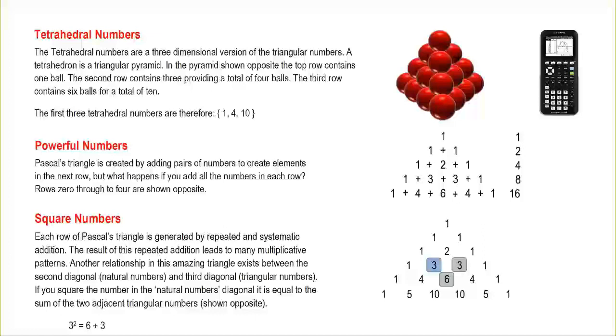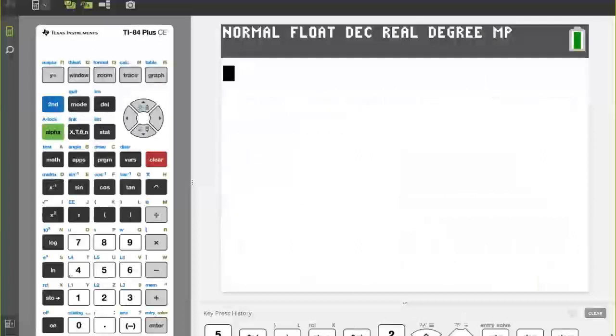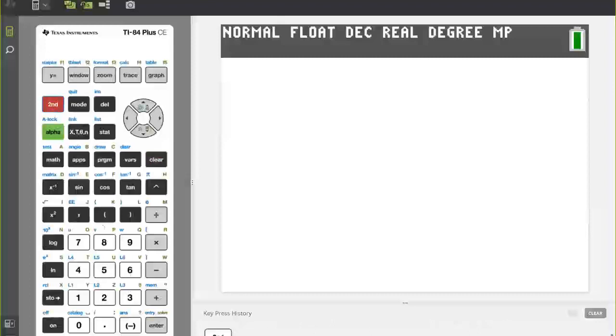I'm just going to quickly show you on the tetrahedral numbers, using the calculator, to work out that set and the formula for it. The elements for tetrahedral numbers are 1, 4, 10. The next one works out to be 20. The next one, 35. To try and get a formula for that, we can actually use a cubic regression.